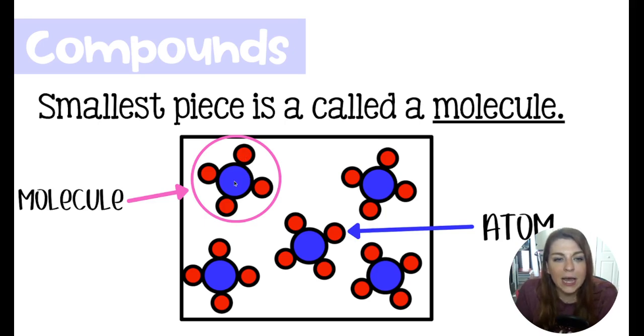Again, this is methane, so the entire CH4 makes the molecule, and then atoms are individual circles here. So here we have four hydrogen atoms and one carbon atom.